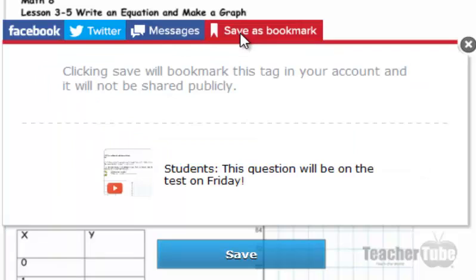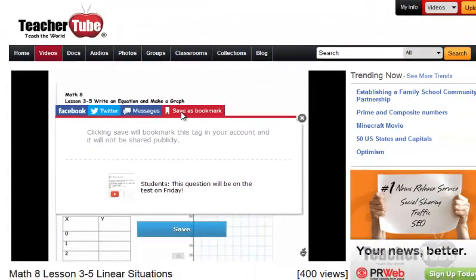Now what this will do, it'll generate an automated URL. So for instance, if you came back and found this video on TeacherTube, it's actually not going to have the annotations on there. But with a unique URL that you share or save as a bookmark, you can share with others, that will actually have the annotations on there.